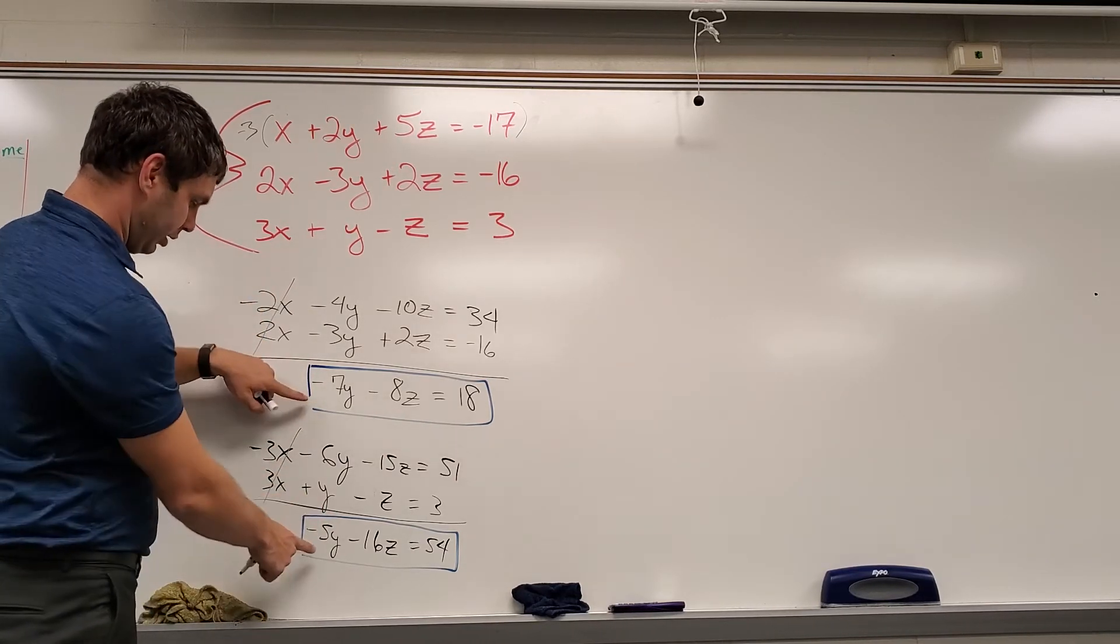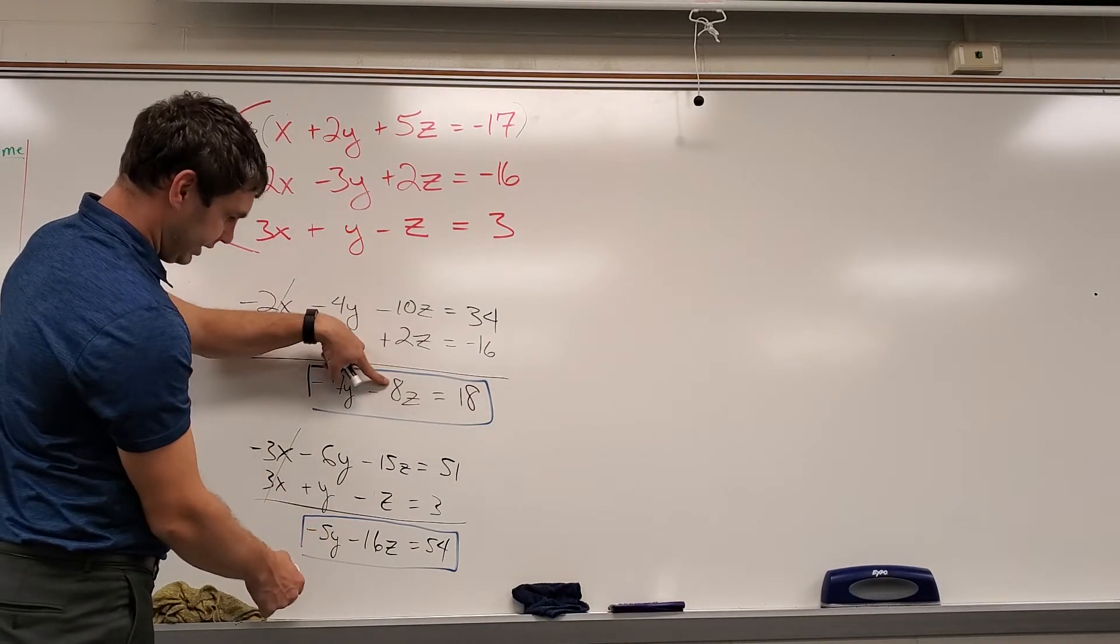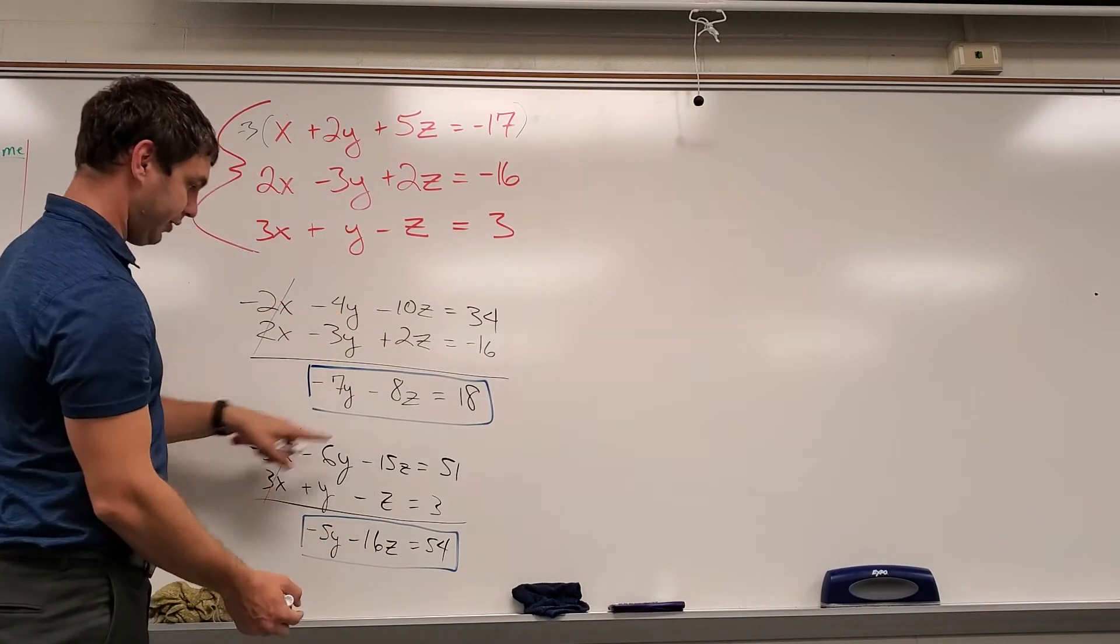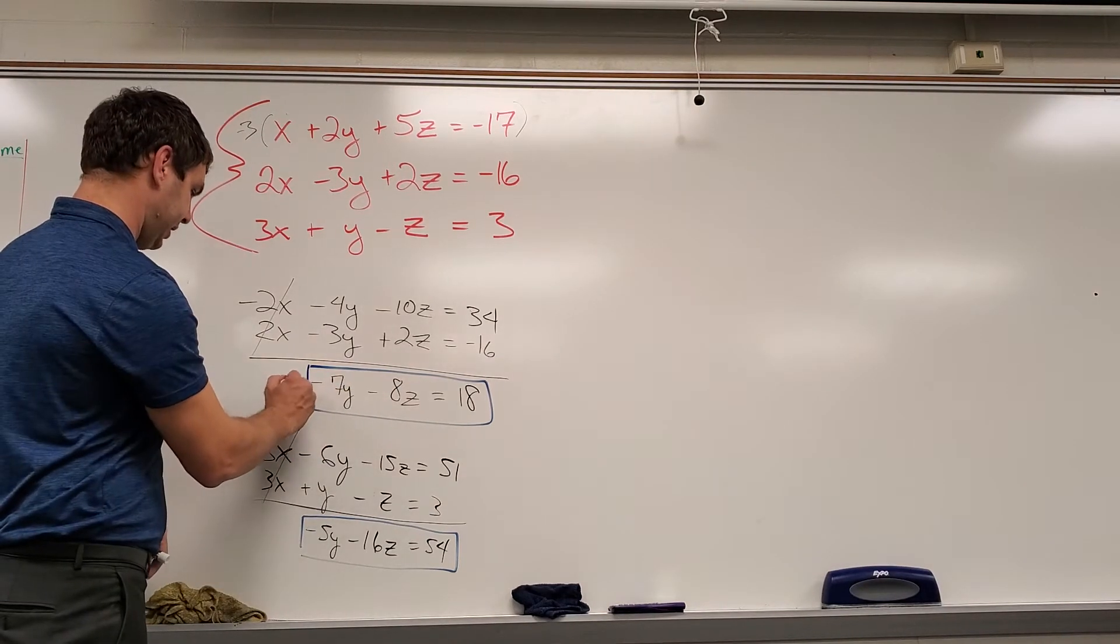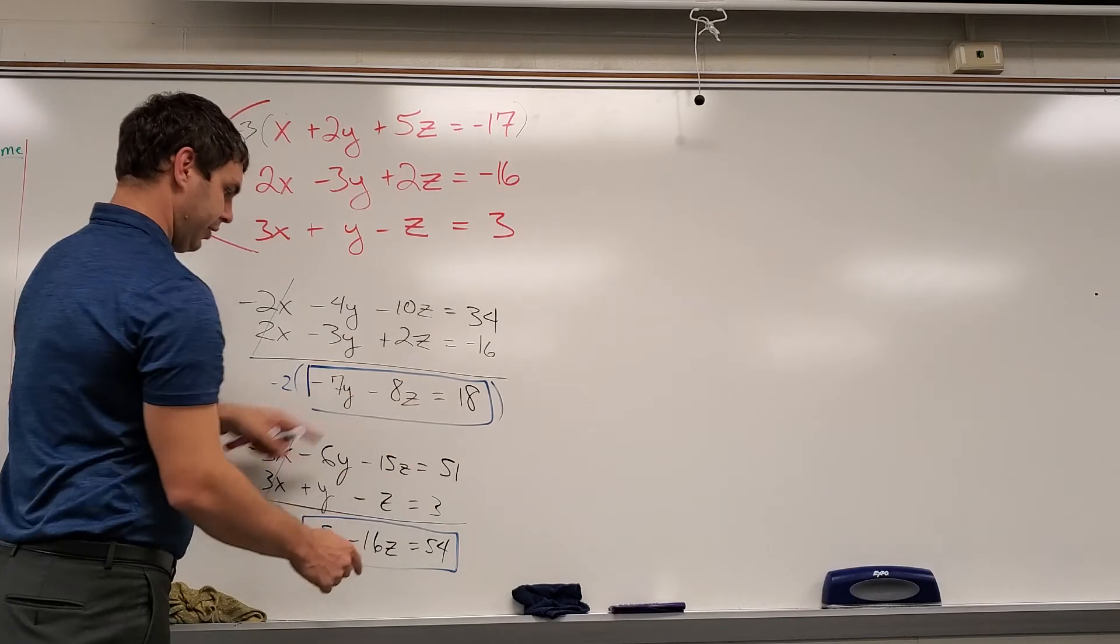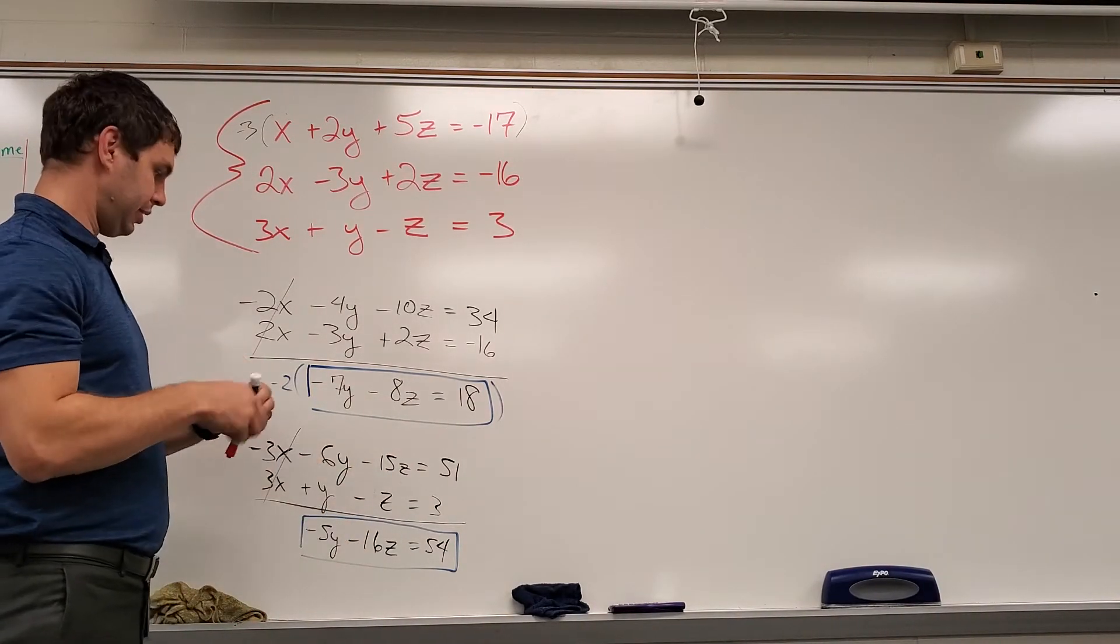So if I look at what I have left here, I have a negative 7 and a negative 5. Those don't play nicely with each other. But negative 8 and 16 will, if I multiply this times negative 2. If I multiply this times negative 2, this whole equation, now we're giving you a positive 16z. And this is already a negative 16z. Those can eliminate. Let's do that.